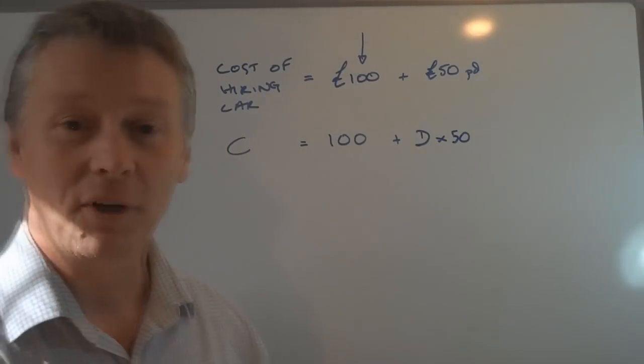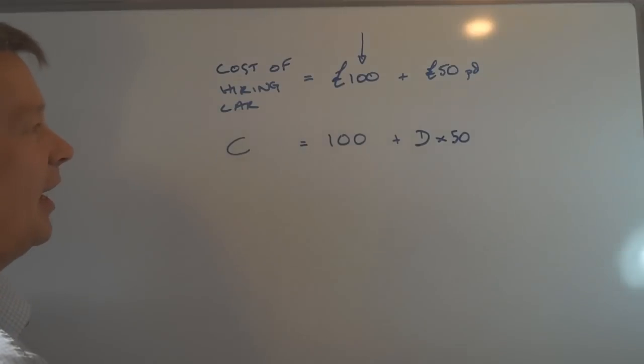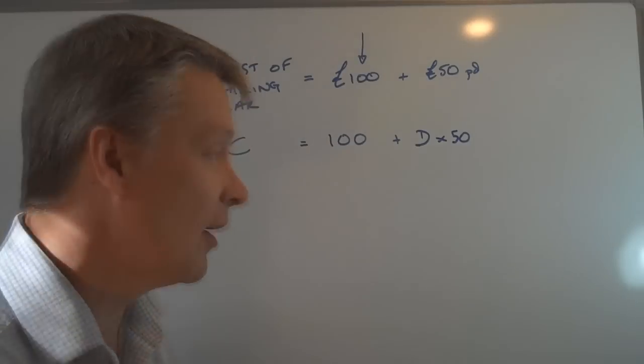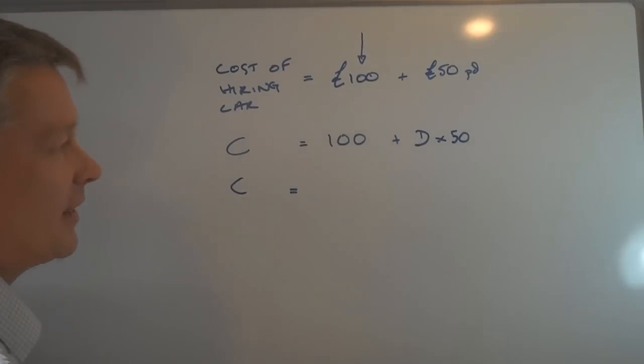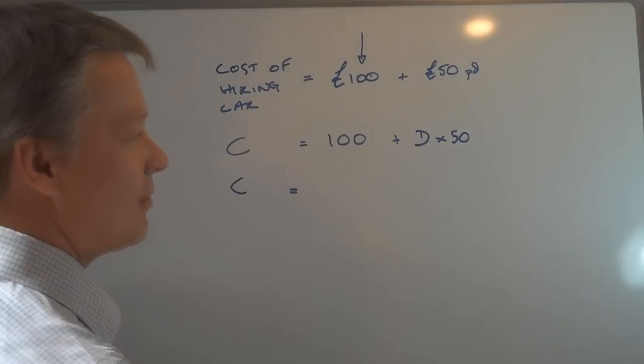Alright, now I'm going to tidy this up a little bit just because it's better from algebra and also from the presentation of the formula to make sure that you maximize your marks to make it look a little bit more mathematical. So I've got 100 plus D times 50.